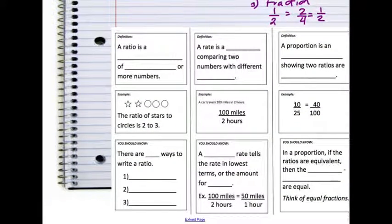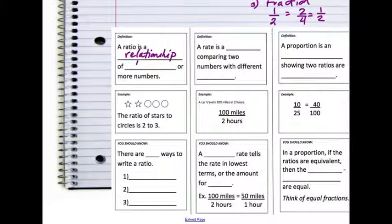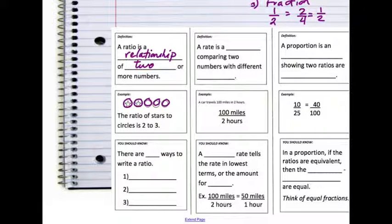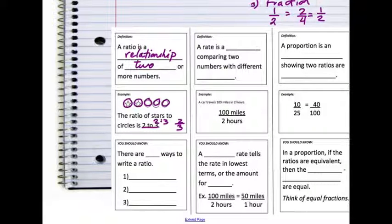We're going to fill in our table notes. A ratio is a relationship of two or more numbers, and the relationship is comparing those two numbers. An example is the ratio of stars to circles is two to three — I have two stars compared to three circles. Again, you can write this ratio in three different ways: two to three with a colon, or two over three as a fraction, or two and the word 'to' three, like it was written in the sentence.